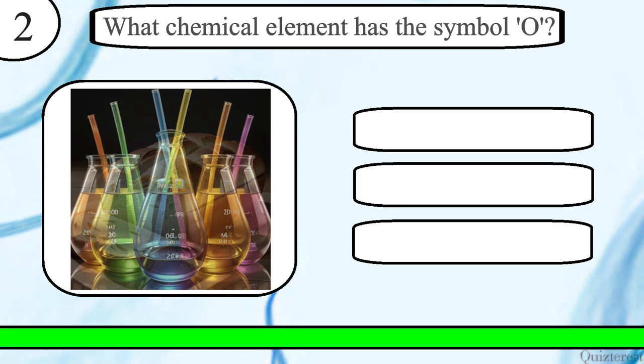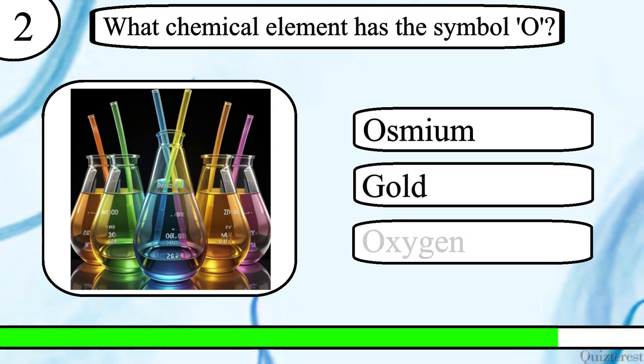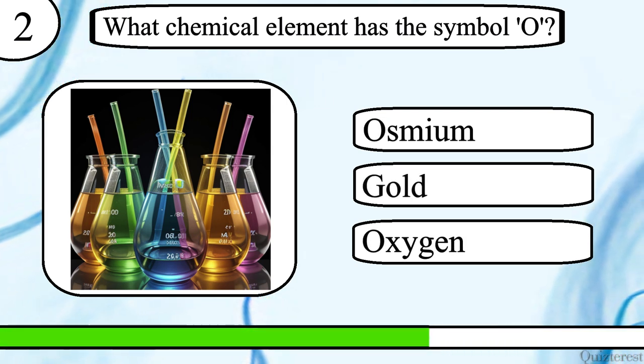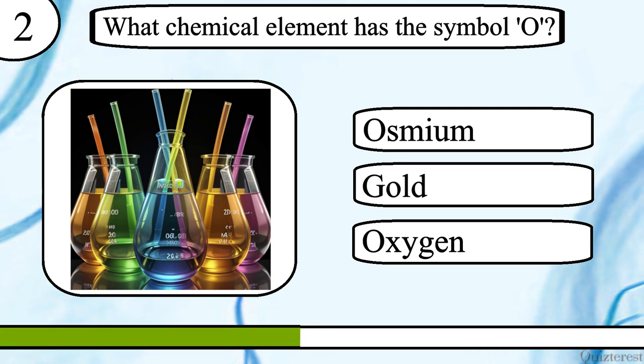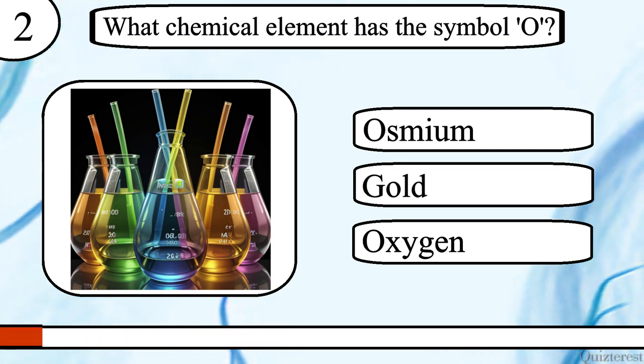Question 2. What chemical element has the symbol O? Osmium, gold or oxygen? The correct answer is oxygen.